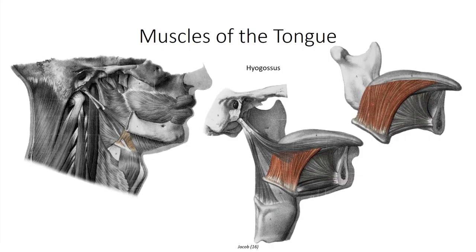The hyoglossus is located posterolaterally in the oral cavity. Its fibers project superiorly off the lateral arms of the hyoid to insert into the lateral aspect of the root of the tongue, and its contraction depresses and retracts the tongue. The styloglossus originates off the styloid process along with the stylohyoid and digastric muscles, with its fibers projecting into the superolateral aspect of the root of the tongue. Styloglossus contracts to retract and elevate the tongue.